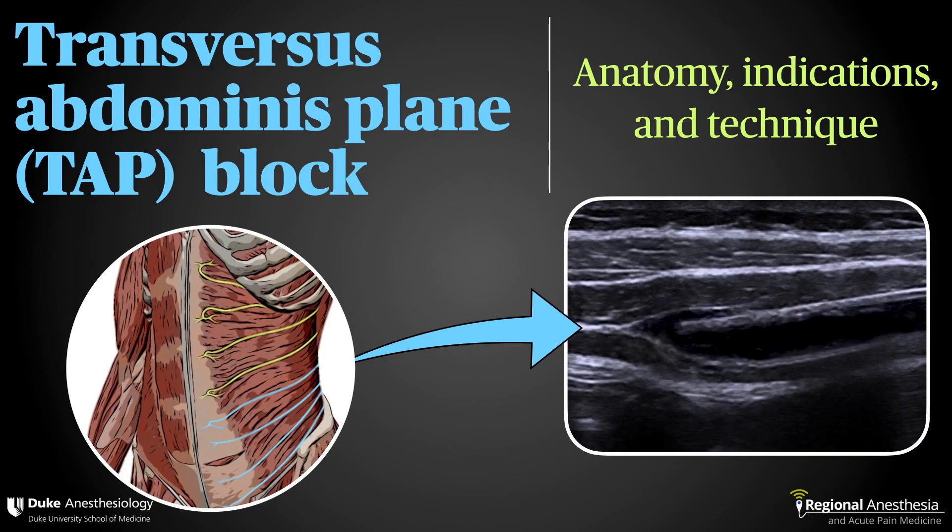The transversus abdominis plane block is a useful technique to provide analgesia for procedures on the lower abdomen. In this video, we'll describe the anatomy, sonoanatomy, and some tips and tricks to ensure your patients get the most out of your TAP blocks.